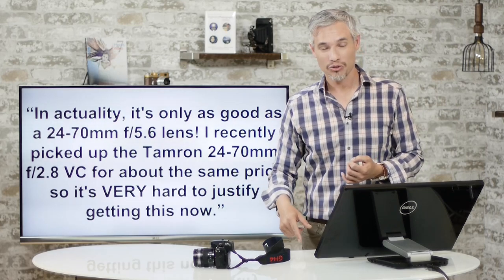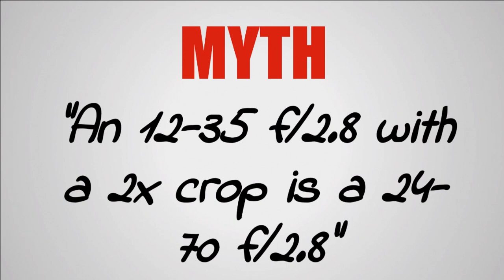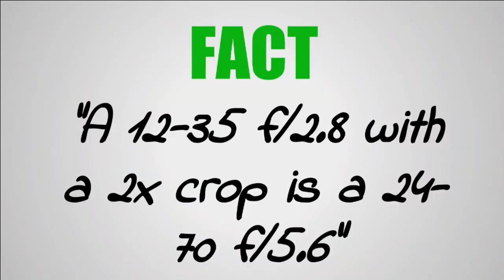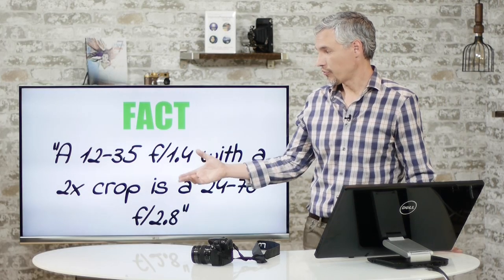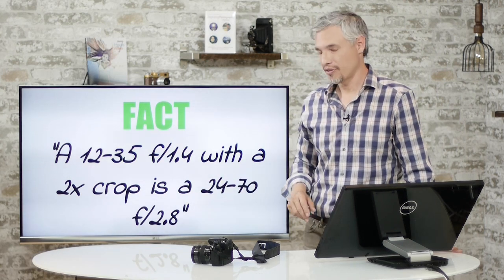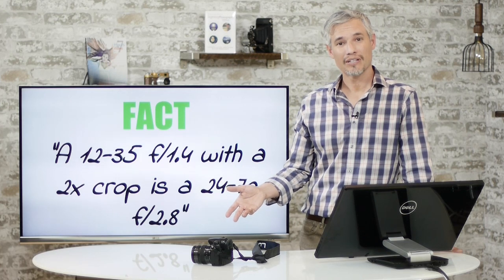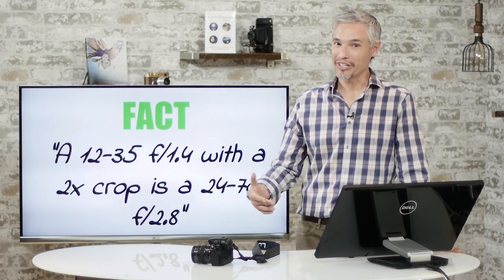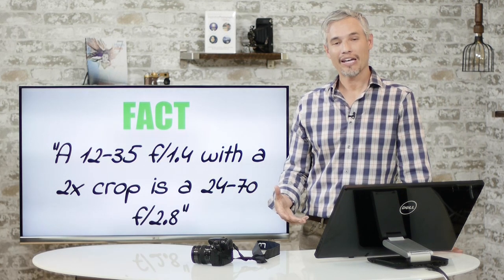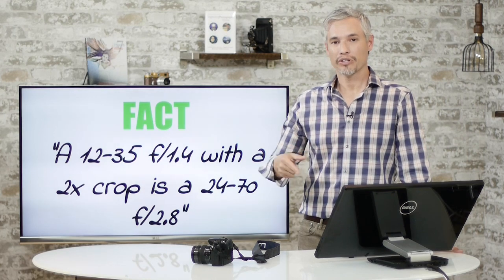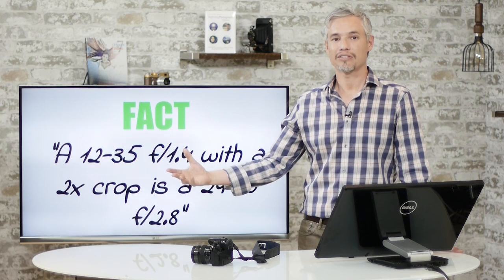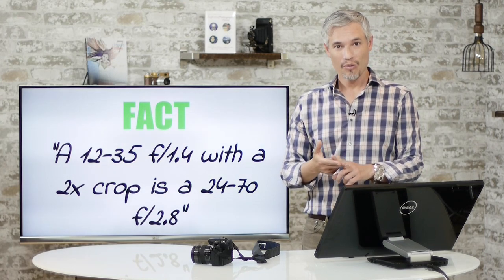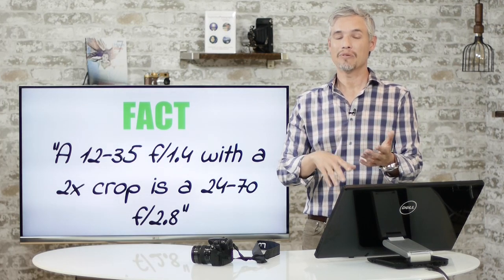So the myth: a 12-35 f2.8 with a 2x crop is a 24-70 f2.8 — false. A 12-35 f2.8 with a 2x crop is a 24-70 f5.6. Or equivalently, a 12-35 f1.4 with a 2x crop would be a true 24-70 f2.8 equivalent. So how about it, Panasonic and Olympus — make me a 12-35 f1.4 so I can get real 24-70 f2.8 equivalent images with the same clean results and background blur? They haven't done it because people don't know they're supposed to apply the crop factor to the aperture.